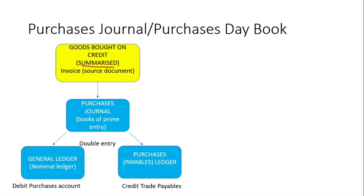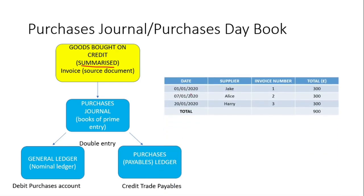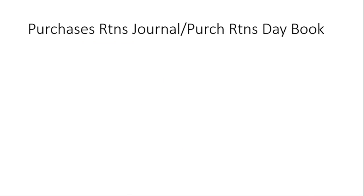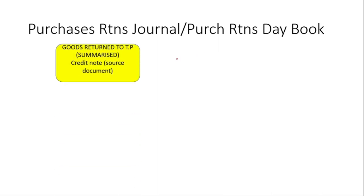Looking at this as a table from the Purchases Journal, we're going to have a date, suppliers' details, invoice number, and the total. The total you see here will be put into the Purchases Account and the Payables Account. Next we have the Purchases Returns Journal — it records goods that are returned to our suppliers.